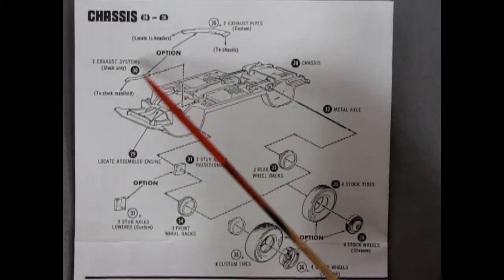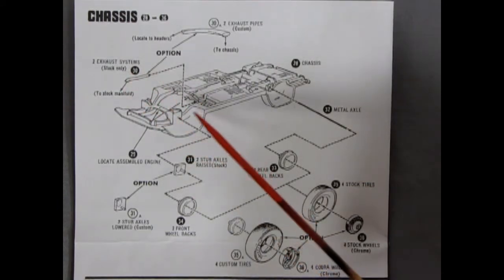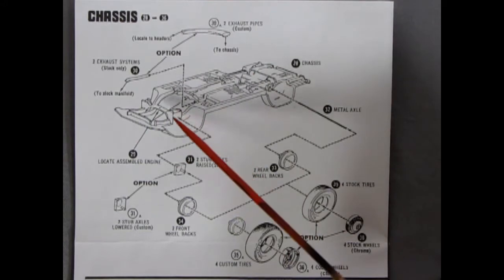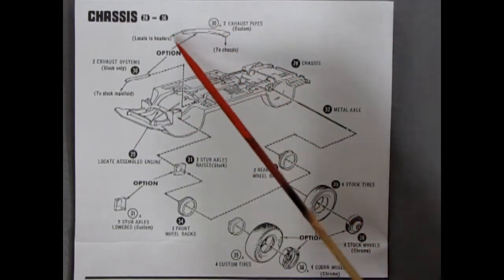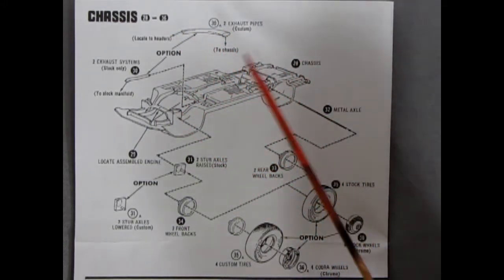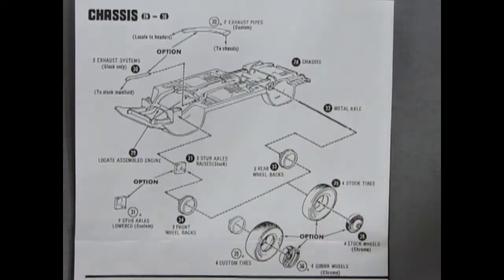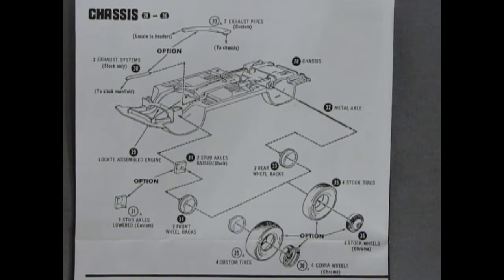And then what else? Exhaust system. Stock only. It glues in on the ends of the pipes and goes to your stock manifolds. Or if you want the big headers, these custom pipes go... sorry big headers. You want the custom pipes that will go off the sides here from the headers. So let's take a look at our final assembly.